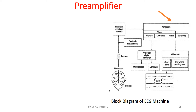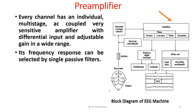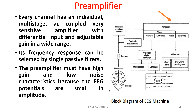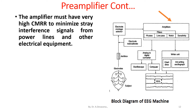Pre-amplifier. Every channel has an individual, multi-stage, AC-coupled, very sensitive amplifier with differential input and adjustable gain in a wide range. Its frequency response can be selected by single stage passive filters. The pre-amplifier must have high gain and low noise characteristics because the EEG potentials are small in amplitude. The amplifier must have very high CMR to minimize stray interference signals from power lines and other electrical equipment. The amplifier must also be free from drift to avoid slow movement recording and changes in temperature.